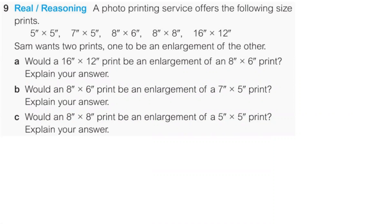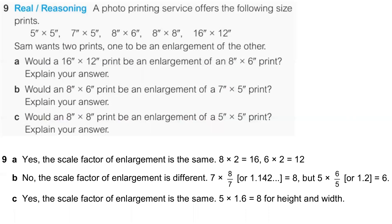Number nine. A photo printing service offers the following prints and Sam wants one to be an enlargement of the other. Go through and explain whether or not it's an enlargement, giving a sentence explaining either why it is or why it is not. For something to be an enlargement, it would have to have the same scale factor in every dimension. With A — yes, it would be an enlargement because both dimensions are twice the size, so it's a scale factor of two. For B, it's not an enlargement — they try and trick you by having it where you can subtract one from both, but we don't use subtraction with enlargement, we use multiplication. The scale factor from eight to seven is not the same as six to five.